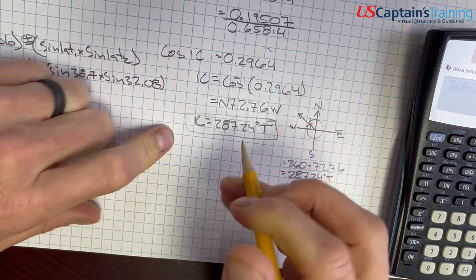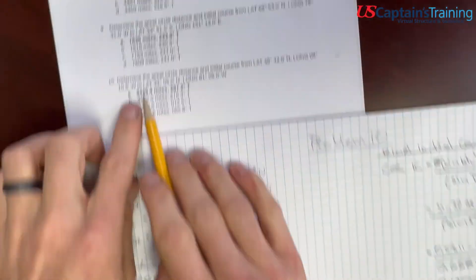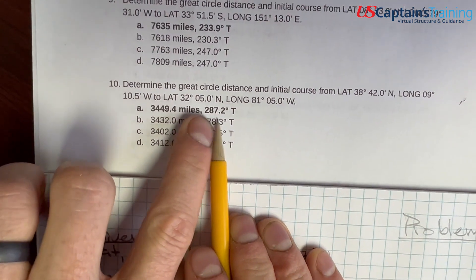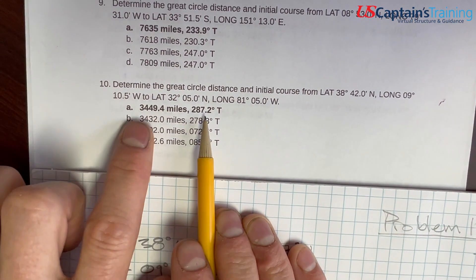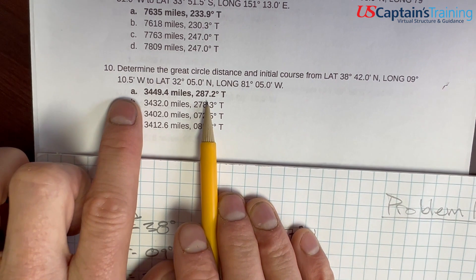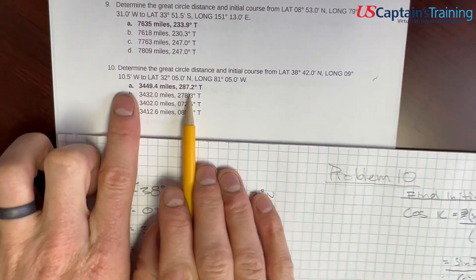287.24 and 3449. This is what we got. So A, this is the correct answer to practice problem 10. Thank you.